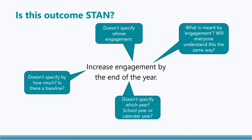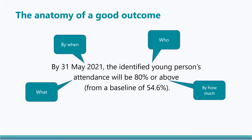The outcome doesn't identify the target pupils — whose engagement is the school seeking to increase? And finally, when is the outcome to be achieved by? December or June? To measure success, there needs to be a clear timeframe. The outcome on the other hand provides sufficient detail, clearly identifying what, for whom, by how much and by when. This is a good outcome statement.